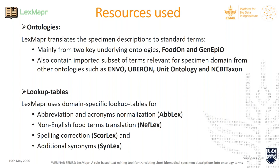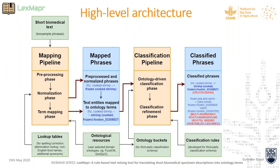For a high-level view of what LexMapper does, there are two components: the mapping pipeline and the classification pipeline. These are the two key components performing entity linking and classification. When short biomedical text — food biosample phrases — is input to the mapping pipeline, we perform pre-processing: cleaning data for punctuation, dealing with plurals, and removing empty biosamples.